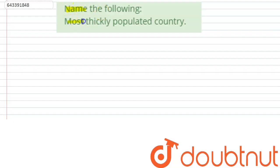is name the following: most thickly populated country. So here the question is not most populated country, it is thickly populated country. When we talk about a thickly populated country, we explain in terms of population density.